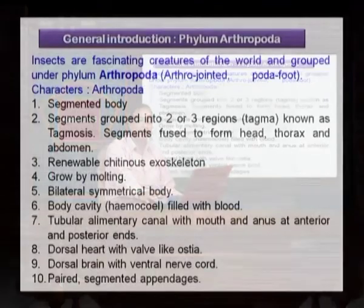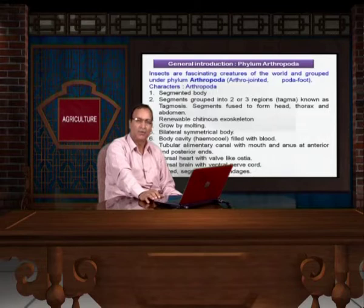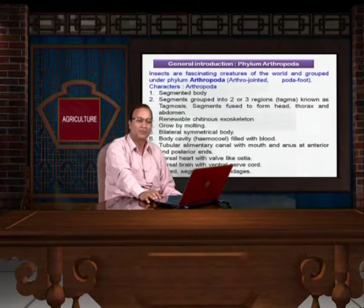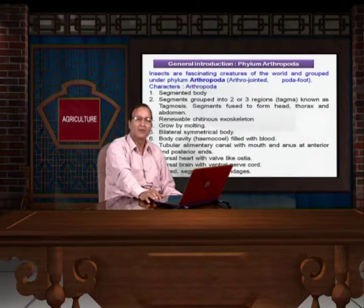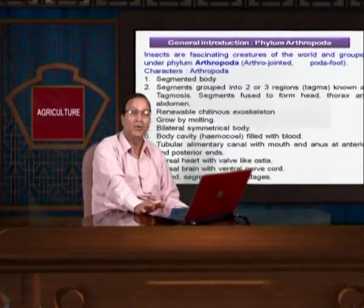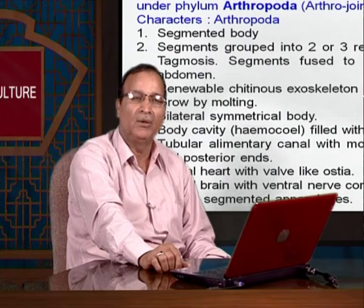The general characters of the phylum Arthropoda. 'Arthro' means jointed and 'poda' means legs, so the animals which have jointed legs come under the phylum Arthropoda. The important characters of the phylum are: they have a segmented body and a renewable chitinous exoskeleton. Body cavity is known as hemocoel, which is filled with blood technically known as hemolymph. The body is bilaterally symmetrical, meaning it can be divided into two equal halves. The heart is present on the dorsal side whereas the nerve cord is present on the ventral side of the body.